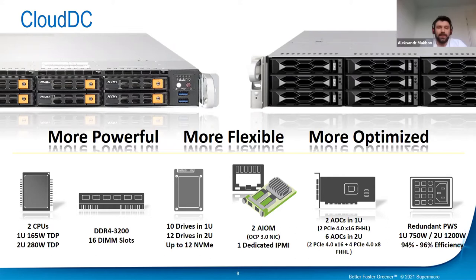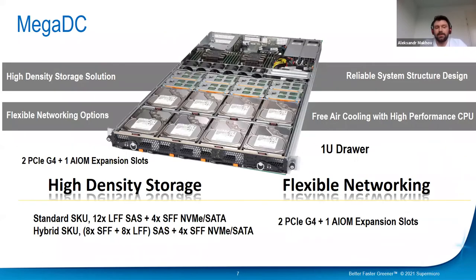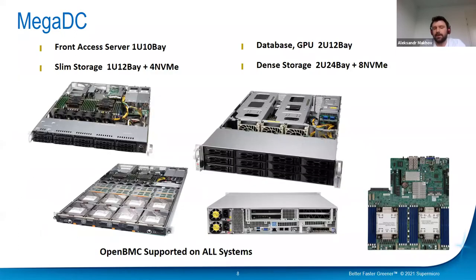Both AMD and Intel last-generation CPUs can be used in the Cloud DC platform. The next good example of the new generation of Supermicro complete solution servers is the Mega DC platform, designed for hyperscale infrastructure deployment. This platform has an excellent density index — 12 drives in 1U — but still has great expansion options: two PCIe Gen 4 and one AIOM OCP-3 expansion slots. Mega DC is a family of 2U and 1U servers designed for software-defined storage, big data solutions, and other applications.